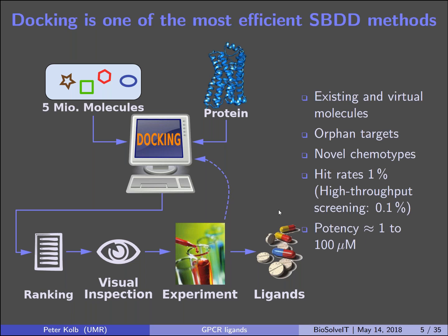Why do we think docking is a worthwhile pastime? With any computational method, we can dock existing and virtual molecules — answering the question from bench chemists: what molecule should I make next? We can also tackle orphan targets, particularly in the GPCR field where many receptors have known functions but unknown natural ligands. We routinely discover novel chemotypes — molecules with a different 2D layout than ligands already known for certain targets.